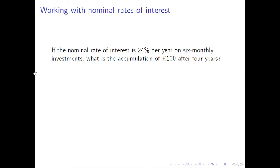Consider the following problem. If the nominal rate of interest is 24% per year on six-month investments, what is the accumulation of 100 pounds after four years? So if we invested 100 pounds, after four years, how much money would we have?